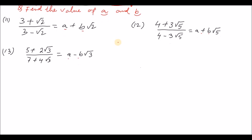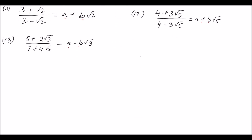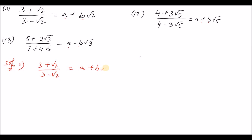Coming back to question number 11 and its solution: the expression is 3 plus root over 2, divided by 3 minus root over 2, equal to a plus b root over 2. We need to find the values of a and b.